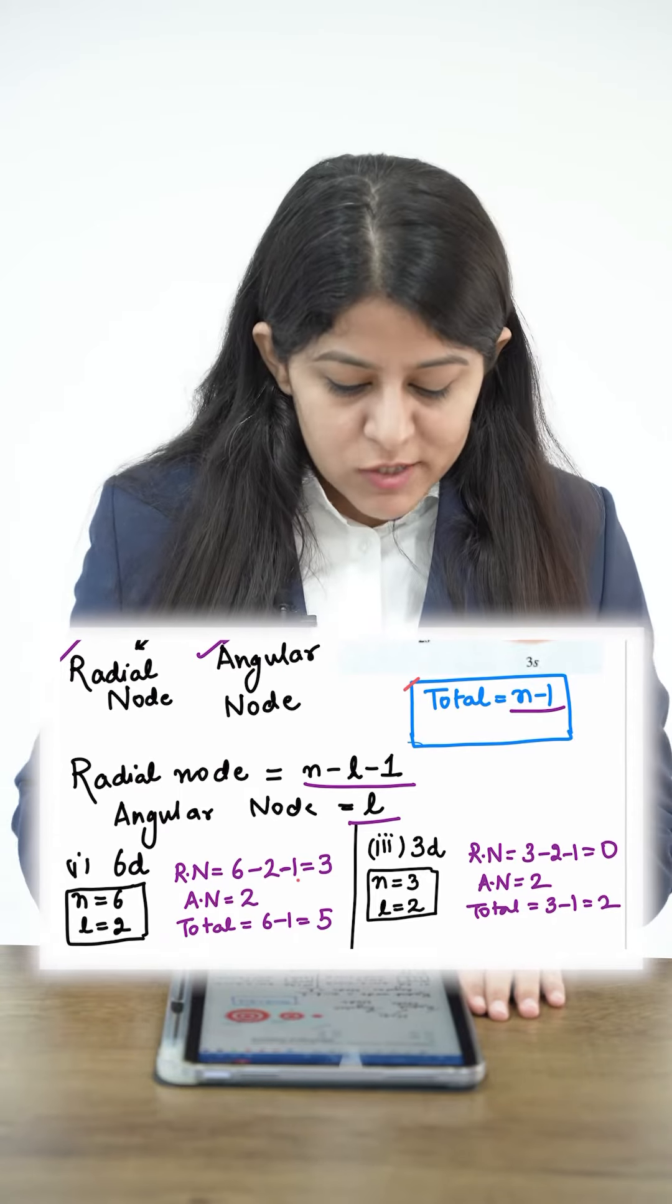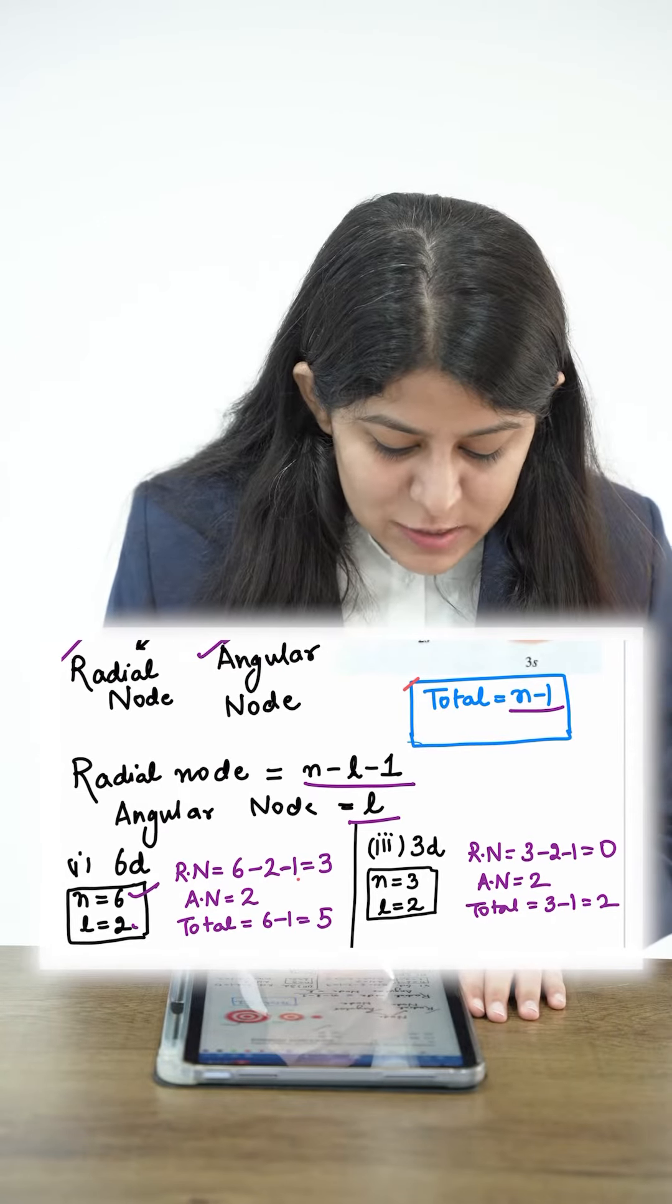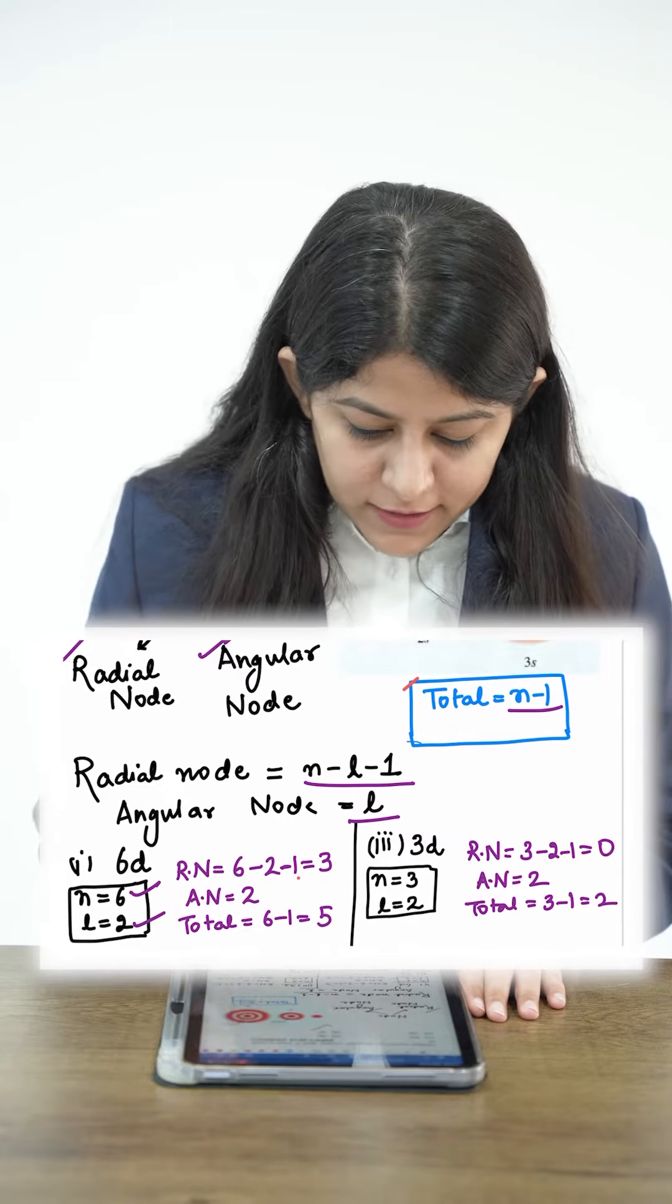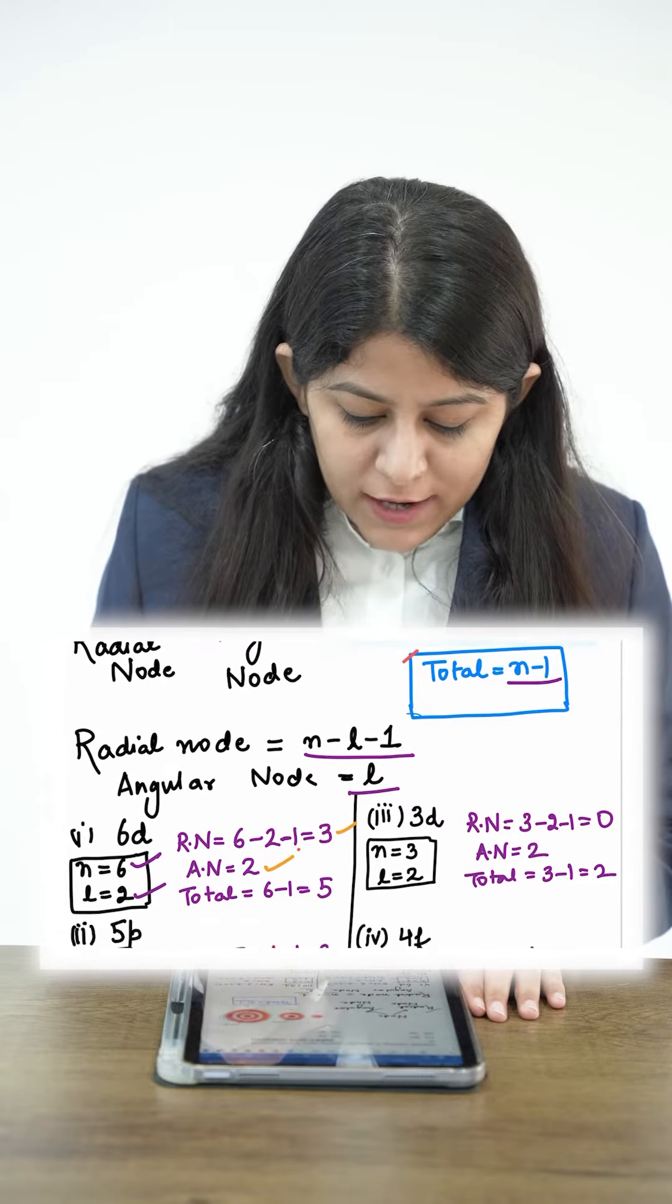Now let's see the options. The first option is 6d: N is 6, L is 2. So based upon that, the radial nodes are 3, angular nodes 2, and total 5.